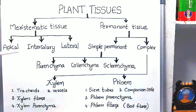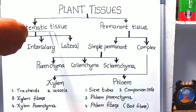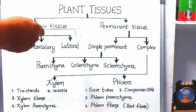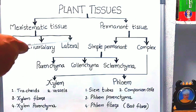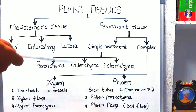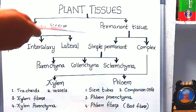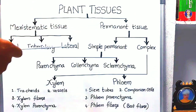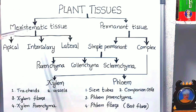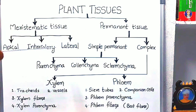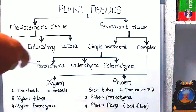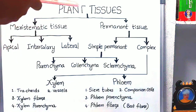Permanent tissues are formed when meristematic tissues undergo divisions, forming new cells. The cells formed by the meristematic cells take up a specific role and lose the ability to divide. As a result, they form permanent cells or permanent tissues. This process of taking up a permanent shape, size, and function is called differentiation.